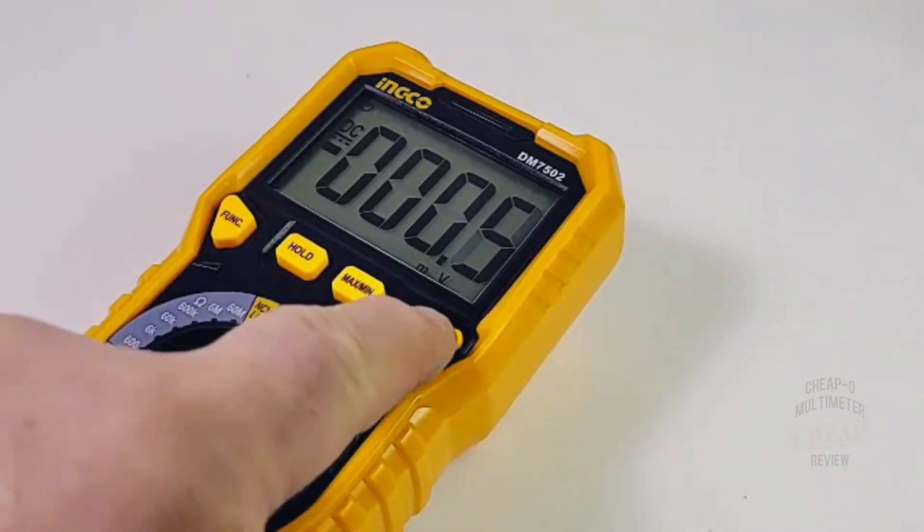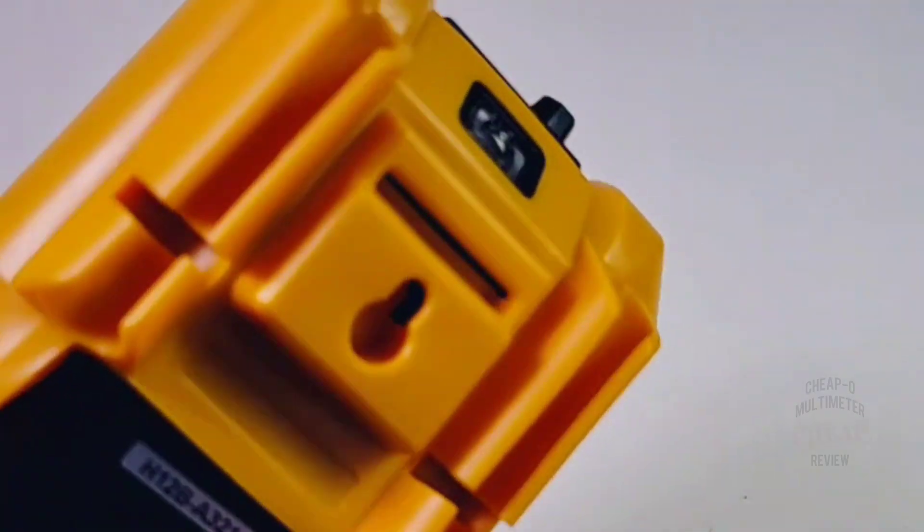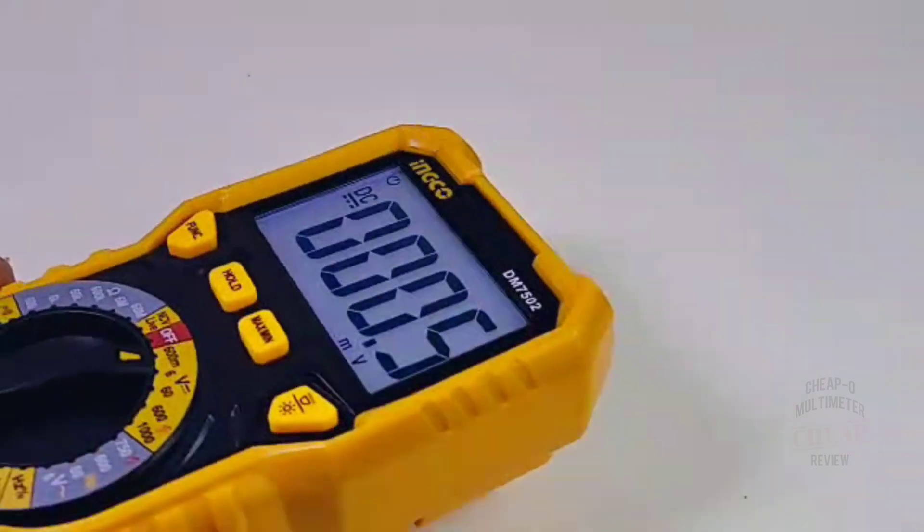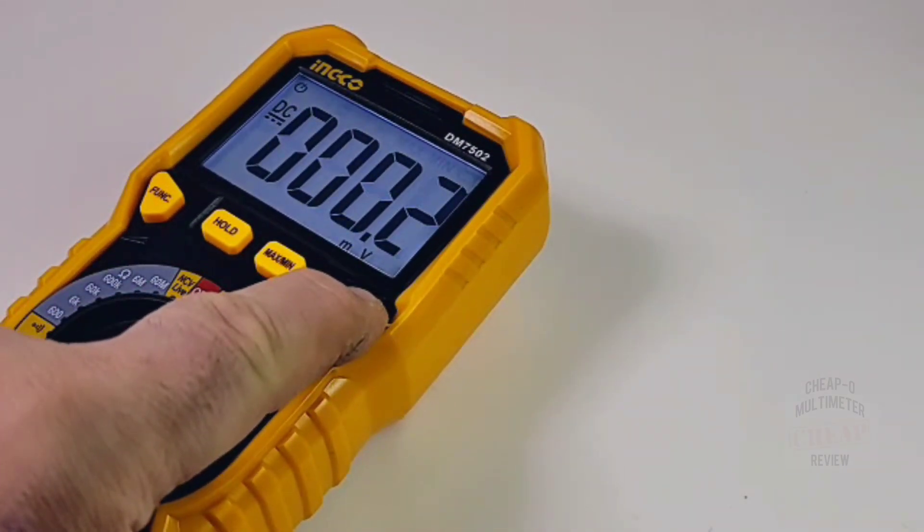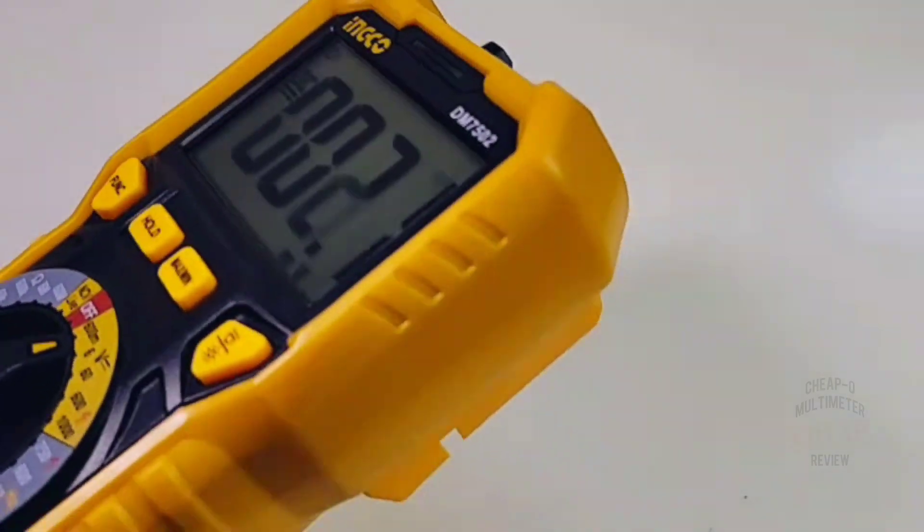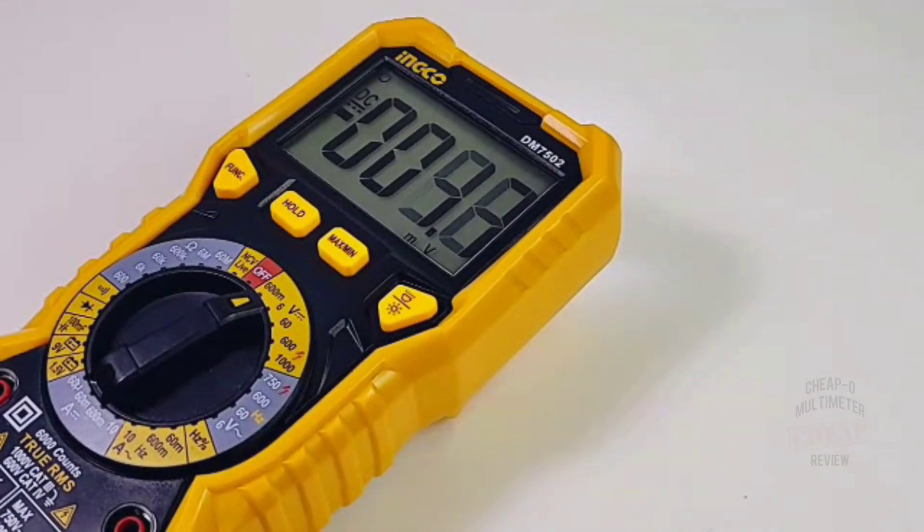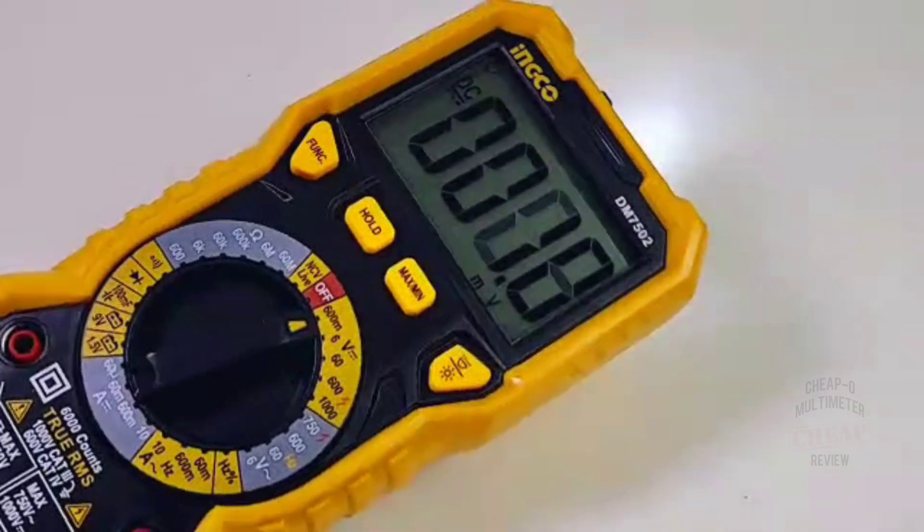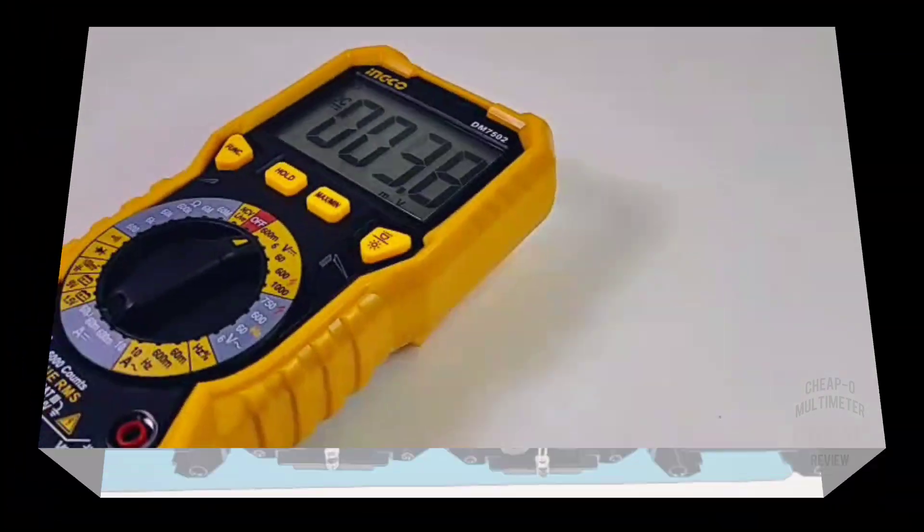Something else I like is the fact that when you turn on the backlight, you actually are not enabling the flashlight. So to get the flashlight going, you've got to hold down, and then you get the flashlight. So nice. A lot of multimeters today, flashlight is invoked as soon as you turn on the backlight. So excellent.